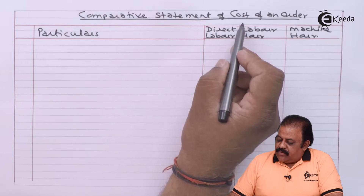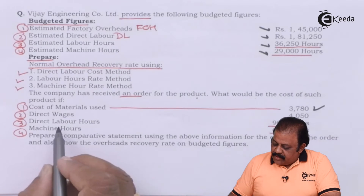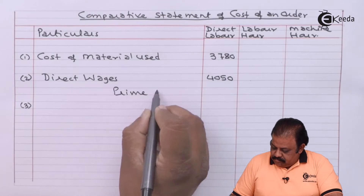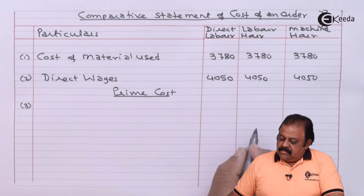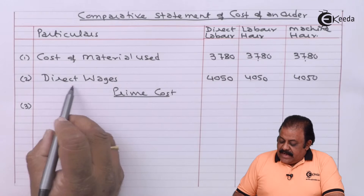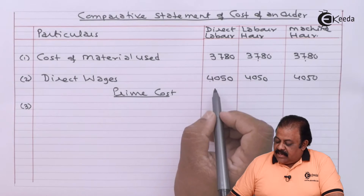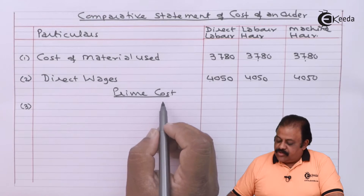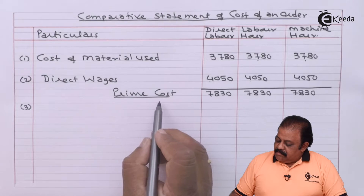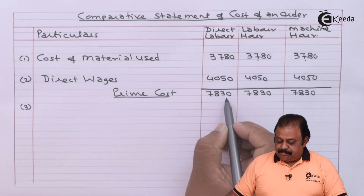Let us prepare now a comparative statement of cost of an order to be executed. Cost of material used is given as 3,780 and direct wages 4,050. Under all three methods, cost of material used will remain the same: 3,780, and direct wages will remain the same: 4,050. We can add material and direct labor to arrive at prime cost, which is 7,830 — the same under any method.